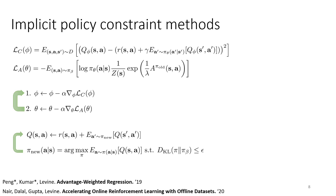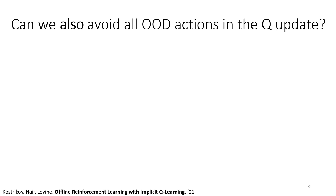To implement this in practice, you create a regular Q-function critic loss and an actor loss which is this weighted maximum likelihood, then alternate between gradient steps on the critic and actor. This essentially implements the constrained actor-critic framework using an implicit constraint trick. This algorithm with Q-function estimation is called advantage-weighted actor-critic (AWAC). Using Monte Carlo returns gives an algorithm called advantage-weighted regression (AWR).